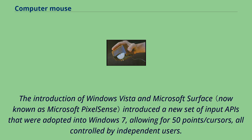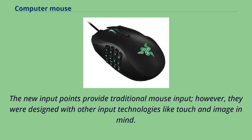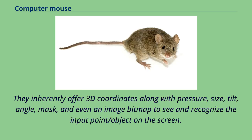The introduction of Windows Vista and Microsoft Surface introduced new input APIs adopted into Windows 7, allowing for 50-point/cursor support all controlled by independent users. The new input points provide traditional mouse input, but were designed with touch and image input technologies in mind. They inherently offer 3D coordinates along with pressure, size, tilt, angle, mask, and even an image bitmap to see and recognize the input point on the screen.